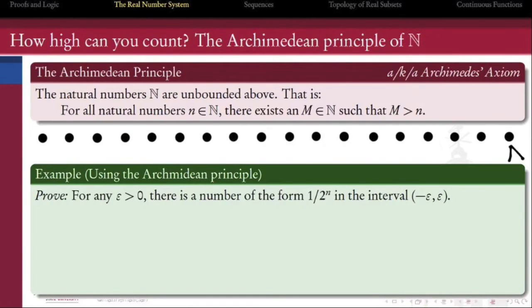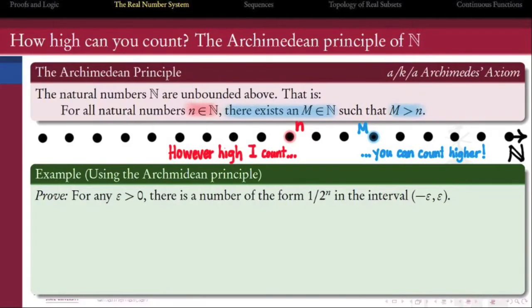The Archimedean principle declares the endless nature of the natural numbers, saying that N has no upper bound. Or expanding on the definition, for all natural numbers n, there exists a natural number m such that m is greater than n.